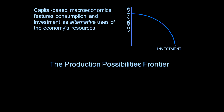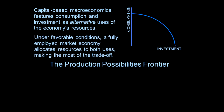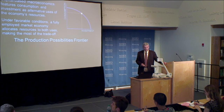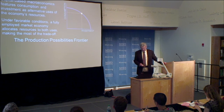Let's start with the production possibilities frontier. In the macroeconomic application, we're looking at the tradeoff between consumption and investment. Under favorable conditions — a fully employed economy — consumption and investment are alternative uses of the economy's resources, and the market allocates resources to both, making the most of the tradeoff. The frontier is the locus of sustainable combinations of consumption and investment. It's possible to go beyond the frontier, but not sustainably — in other words, you get into a region that's unsustainable: a boom that will end in a bust.